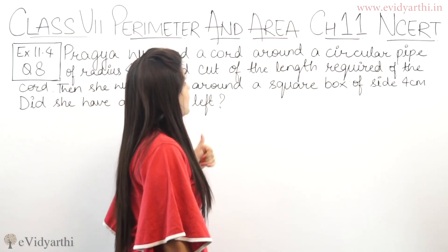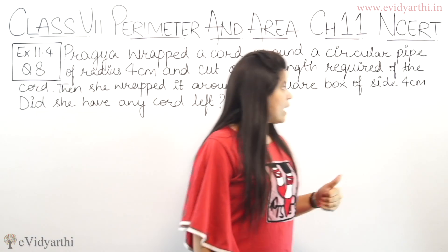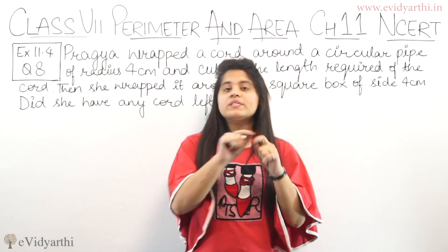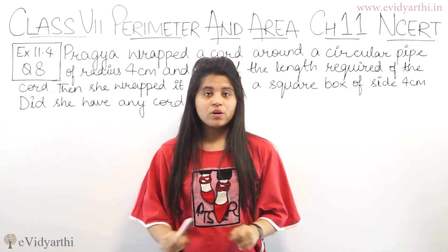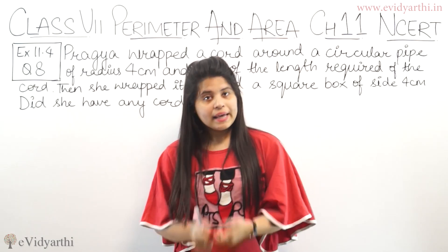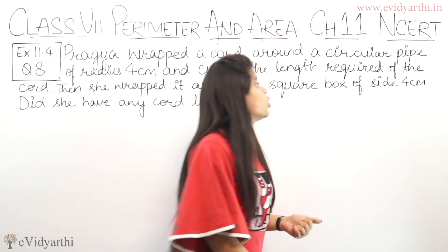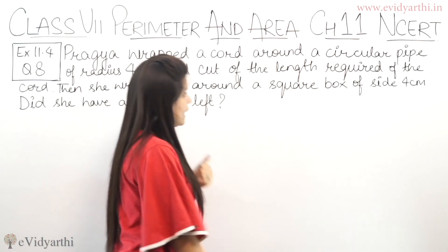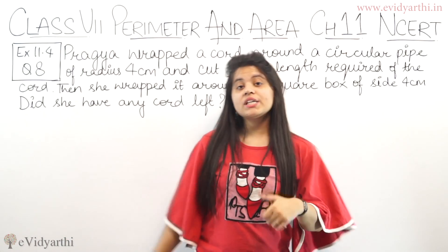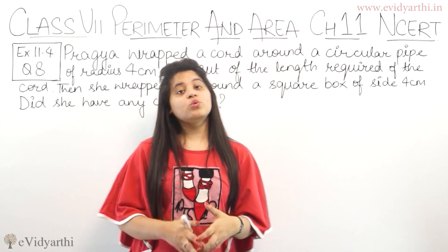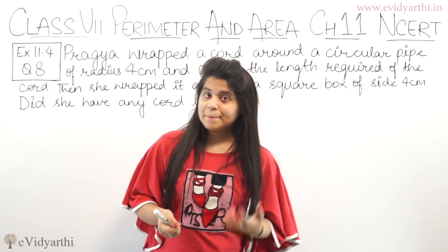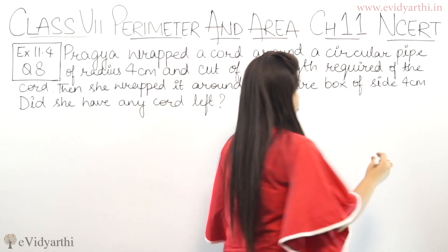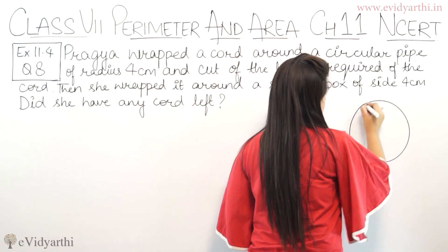Then she wrapped it around a square box of side 4 centimeters. They are asking: did she have any cord left? We are asking if she has any piece of cord or not, and we can see it over here.